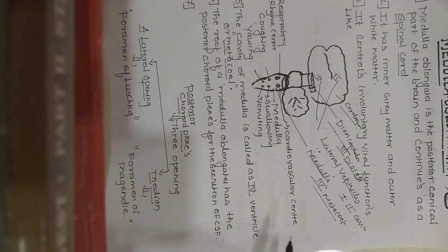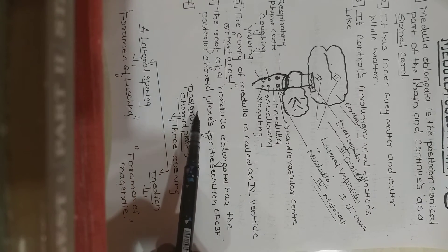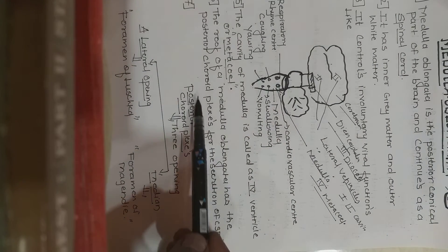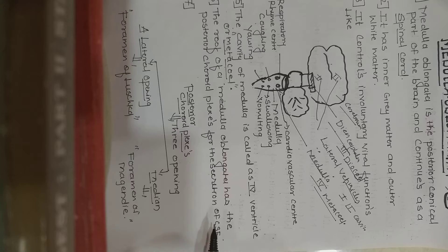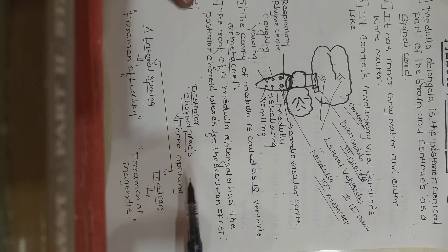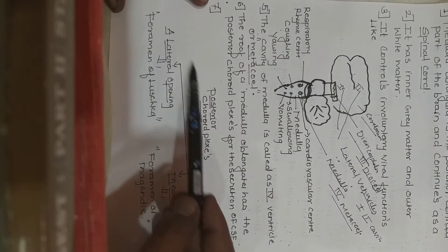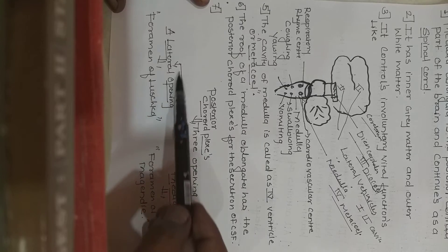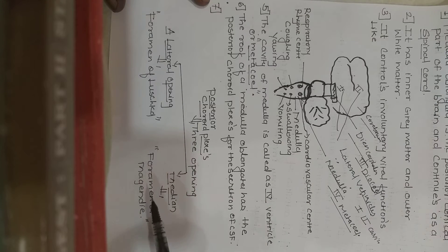The roof of the medulla oblongata has the posterior choroid plexus. This choroid plexus helps in the secretion of cerebrospinal fluid (CSF). The posterior choroid plexus has three openings: two lateral openings called the foramina of Luschka, and one median opening called the foramen of Magendie.